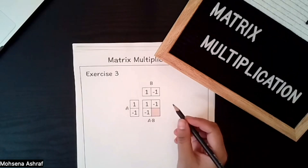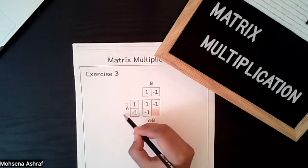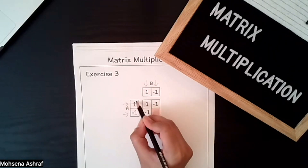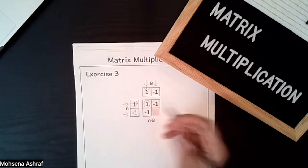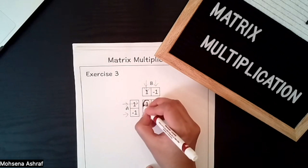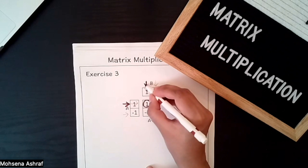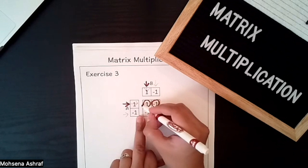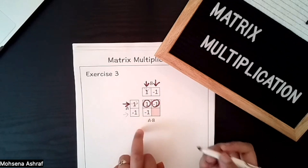Exercise 3. Now we have two matrices each with two rows and two columns. We have to multiply this row with this column. So 1×1 gives 1. For this particular field we multiplied row 1 with column 1. For the next field — first row, second column — we multiply the first row with the second column of B: 1×(−1) gives −1.